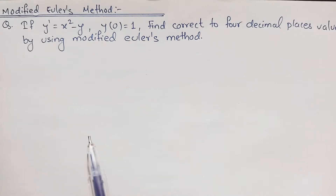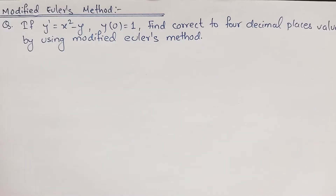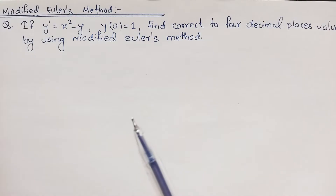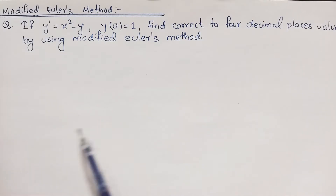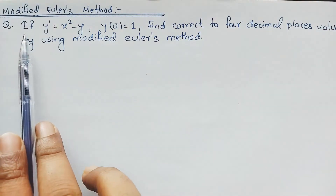Hello everyone, welcome back to Civil Learning Online YouTube channel. In the previous lecture I discussed Euler's method, and here I am going to discuss Modified Euler's method. You may ask: we have studied Euler's method, so why do we need the Modified Euler's method? The answer is simple — Modified Euler's method gives more accurate results compared to Euler's method and helps reduce error in linear approximation.